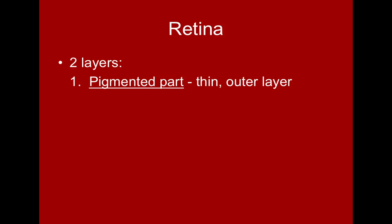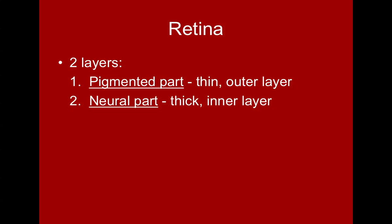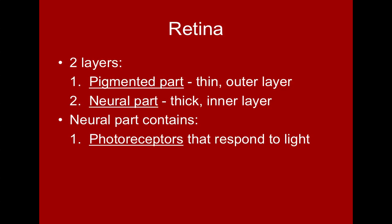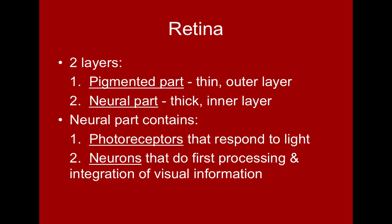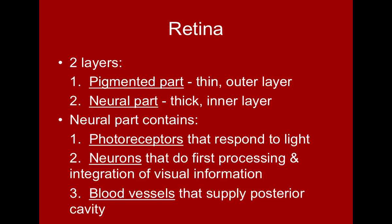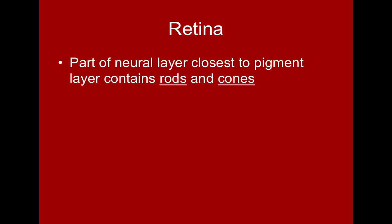The retina has two layers. The first is the pigmented part — a thin outer layer. The neural part is the thick inner layer of the retina and is really what is important to us. It contains the photoreceptors that respond to light and the neurons that start processing and integrating the visual information we receive. The neural part closest to the pigmented layer contains structures called the rods and the cones, both of which are photoreceptor cells.